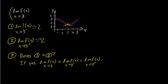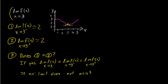Now, what if these two are different values? If the limit of the function from the left is not the same as the limit of the function from the right, then the limit does not exist. So this is all that you're doing when you're asked to find the limit of a function as x approaches some value — check both sides and see if they agree.